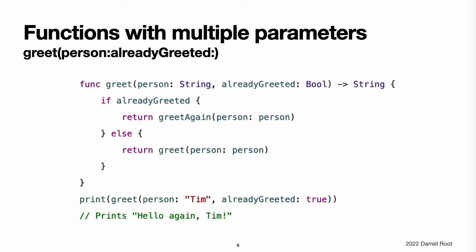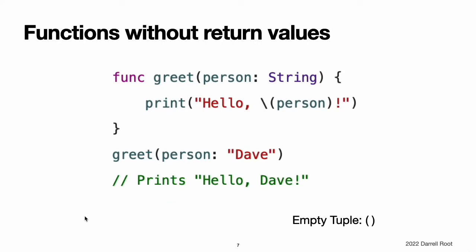Functions with multiple parameters. Functions can have multiple input parameters, which are written within the function's parentheses, separated by commas. This function takes a person's name and whether they have already been greeted as input and returns an appropriate greeting for that person. You call the greetPerson(alreadyGreeted:) function by passing it both a string argument value labeled person and a bool argument value labeled alreadyGreeted in parentheses, separated by commas. Note that this function is distinct from the greetPerson function shown in an earlier section. Although both functions have names that begin with greet, the greetPerson(alreadyGreeted:) function takes two arguments, but the greetPerson function takes only one.